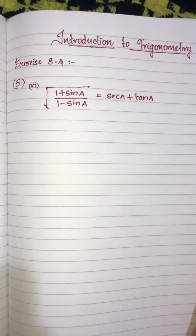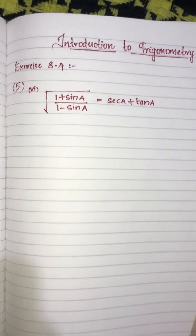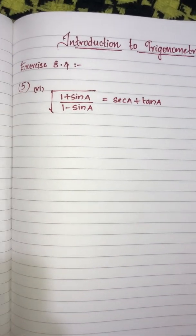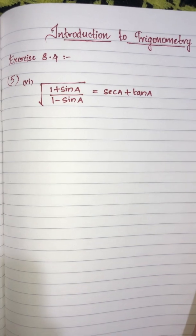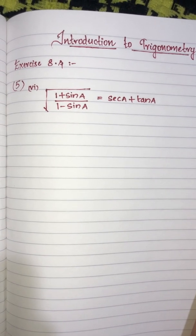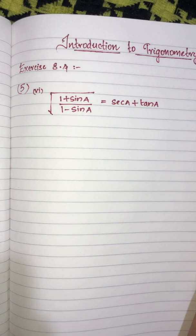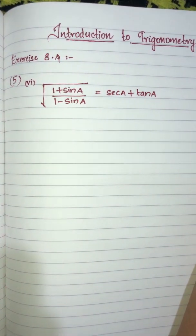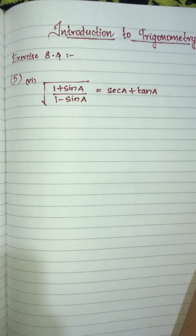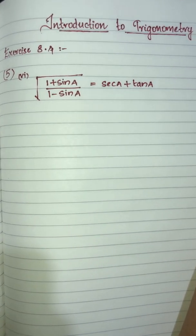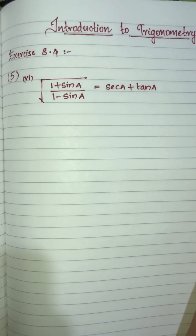Hi students. We are going to do this in the introduction to trigonometry, chapter 8.4. In the fifth question, we are going to do the sixth sub-question and seventh sub-question. The question is: root of (1 plus sin A) divided by (1 minus sin A) is equal to sec A plus tan A.